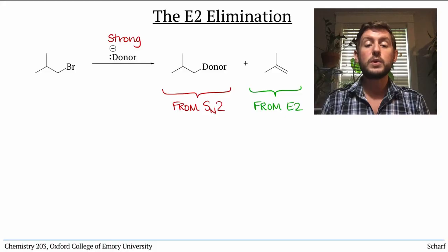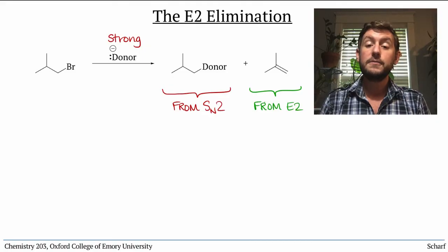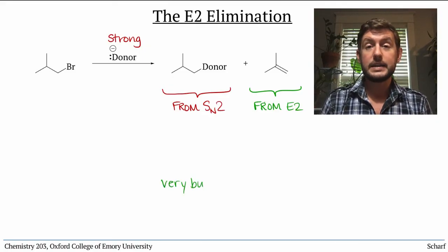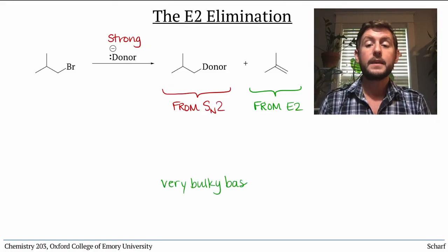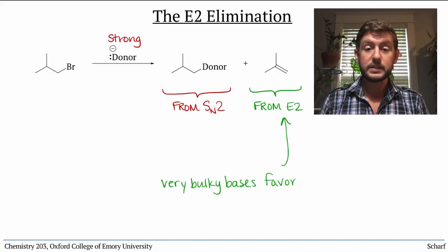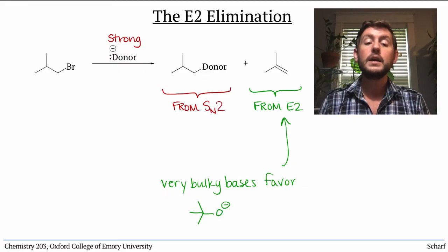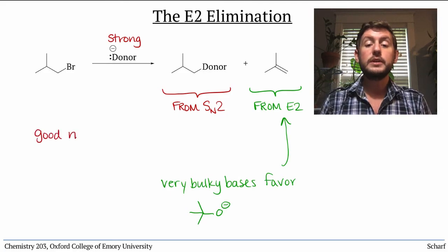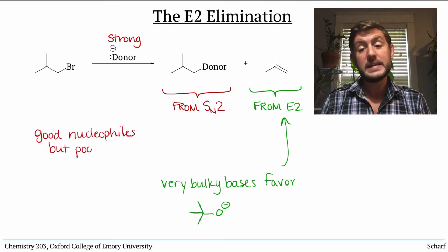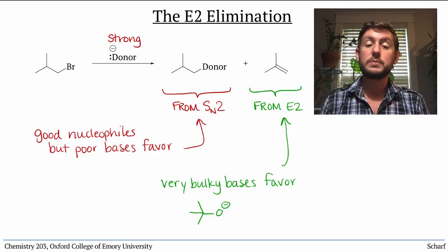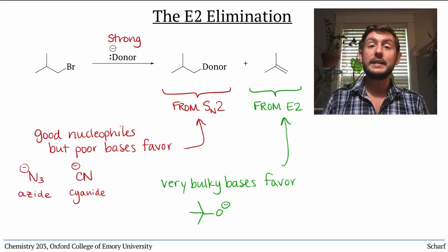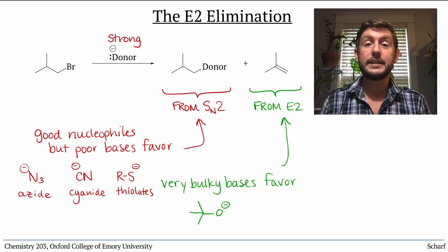We can favor one or the other by judicious choice of nucleophile or base. Very bulky bases, like t-butoxide, which aren't very good nucleophiles in SN2 reactions, can be used to favor the elimination if we wish. Conversely, some nucleophiles are pretty poor bases and tend to favor substitution. These include azide, cyanide, and thiolates.